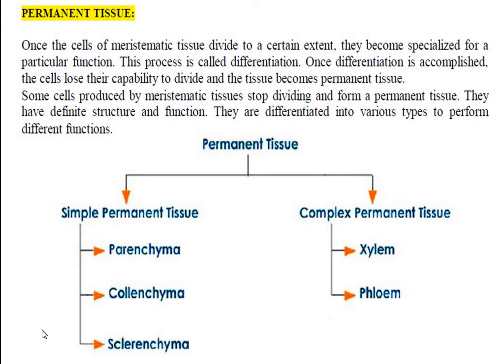Hello students, good morning to all of you. Today in chapter 6 Tissues, we are going to learn in detail about plant tissues. One type of tissue we have already learnt — meristematic tissues. Meristematic tissues are constantly dividing tissues in plants, seen at the growing parts. In the last video we learnt about them and their location.